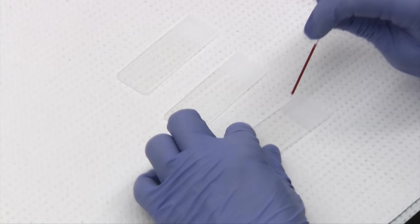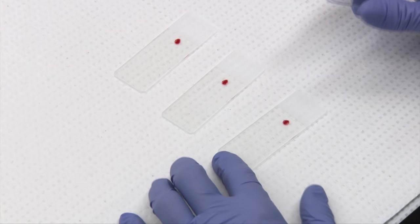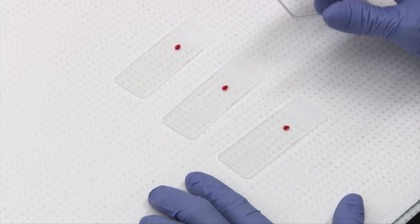Okay, so again we have our three Goldilocks properly sized drops. You want to hold your spreader at about 45 degrees. Now you might have to alter that a little bit depending on the PCV of your patient.